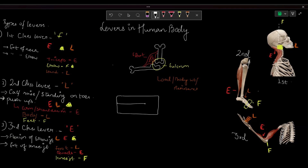Let's write the mnemonics for all three types of levers. The first order has the fulcrum in center (F), the second order has the load in center (L), and the third order has the effort in center (E) — so the mnemonic is FLE. I hope this video is clear. Thank you.